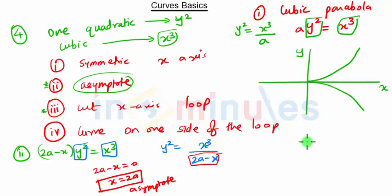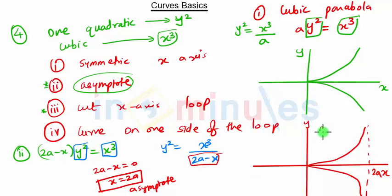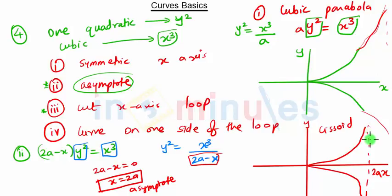This curve is symmetric about the x-axis. With the asymptote at x = 2a, the curve is known as the cissoid. Unlike the cubic parabola which can go to infinity freely, here the curve is bounded by the asymptote at x = 2a but extends to infinity in the y-direction.